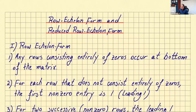Hello everyone. In this video I want to go over row echelon form and reduced row echelon form of matrices. I'll first go over the conditions and then do some examples, so you understand when you look at a matrix how you know if it's in row echelon form or reduced row echelon form.